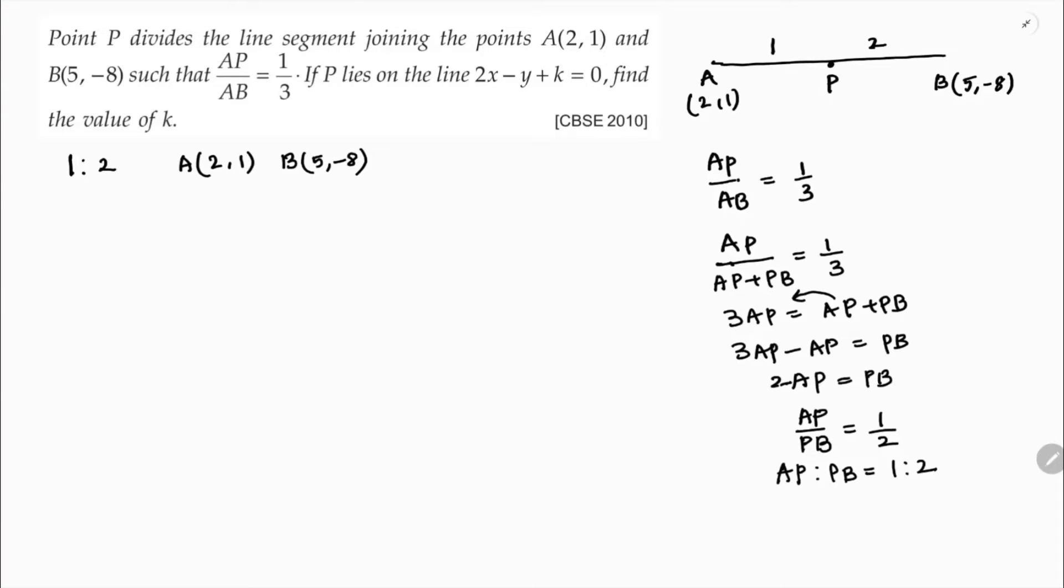Here I will substitute the values in the section formula. To find point P, the formula is M1 X2 plus M2 X1 by M1 plus M2, M1 Y2 plus M2 Y1 by M1 plus M2.